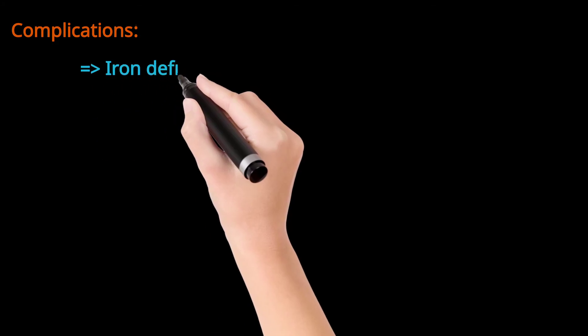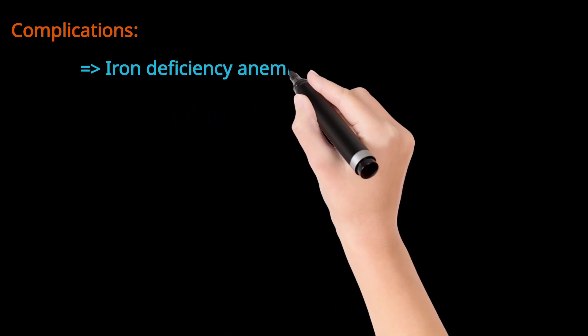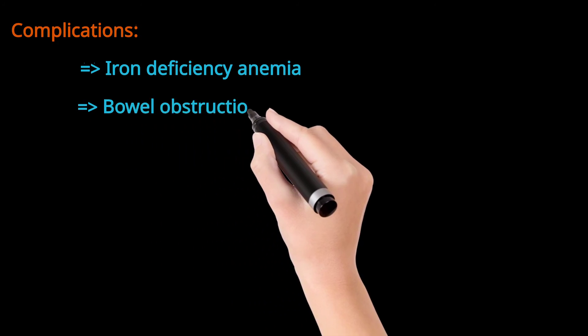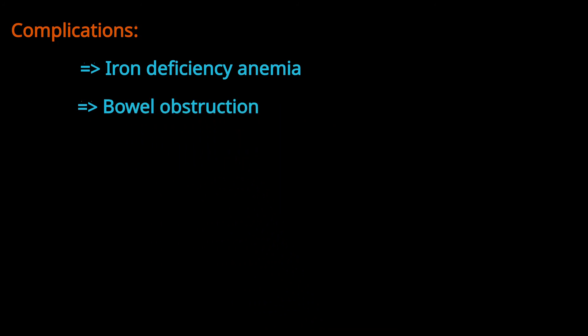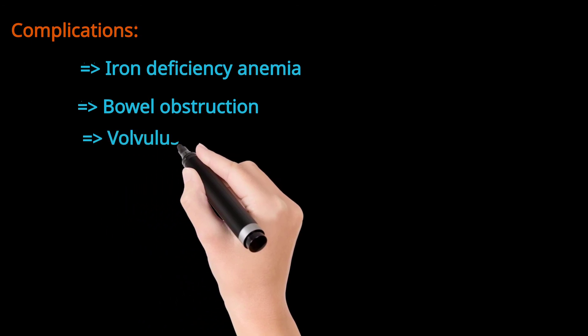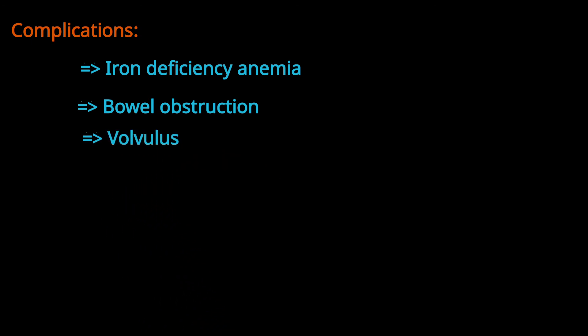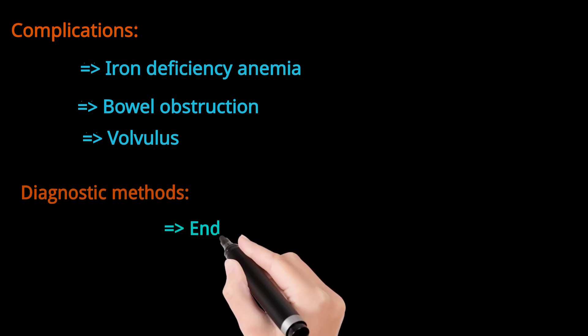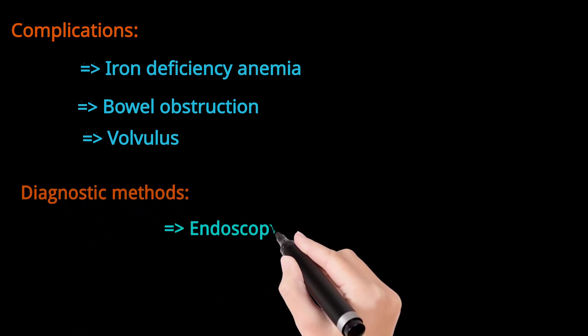Complications arising from hiatal hernia include diaphragmatic strangulation, anemia, bowel obstruction — which is obstruction of any part of the intestine — and volvulus, which is also an obstruction involving looping of the intestine.